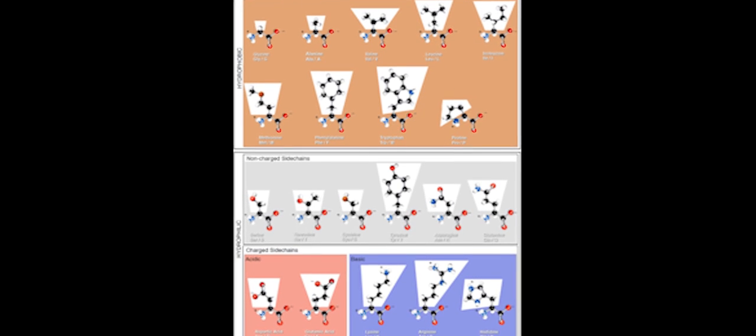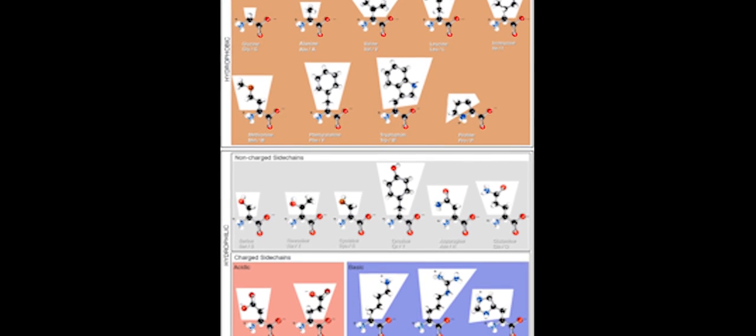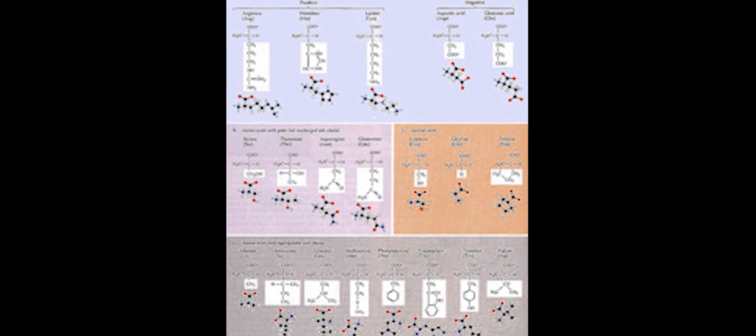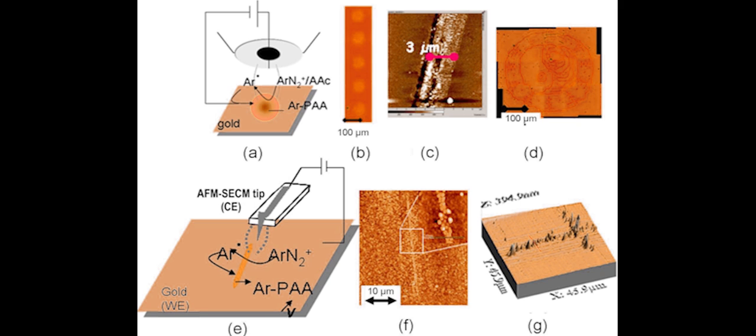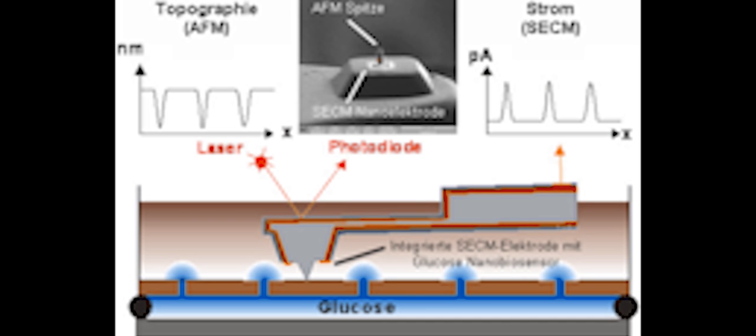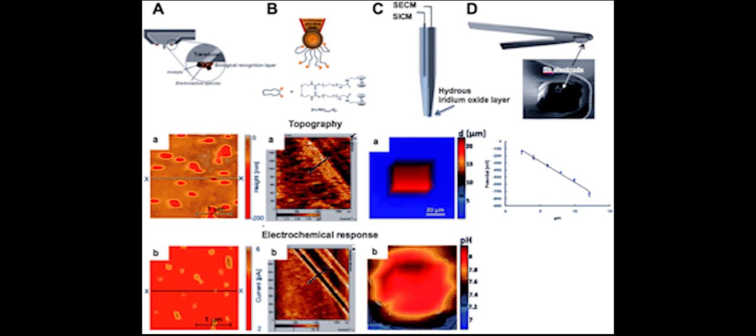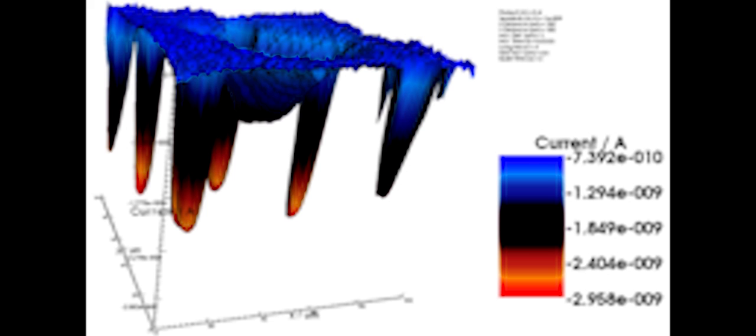We have 20 unique amino acids that are used in life processes here on Earth. But when we analyze the amino acids found in this meteorite, we found nearly 100 unique amino acids inside, as well as tens of thousands of unique molecular compounds.